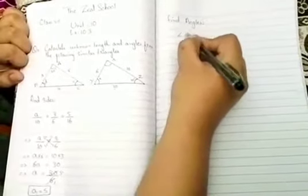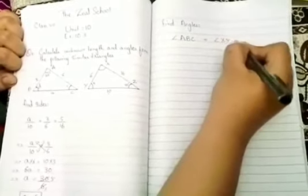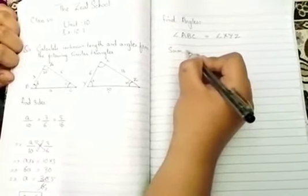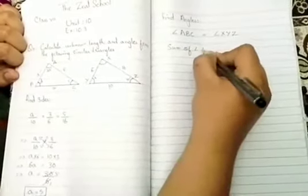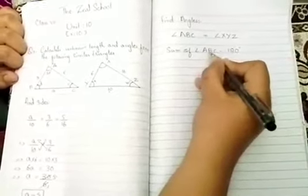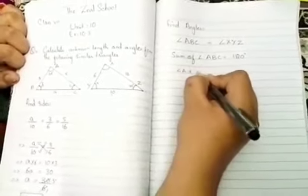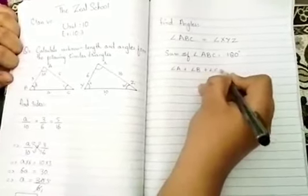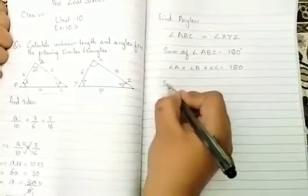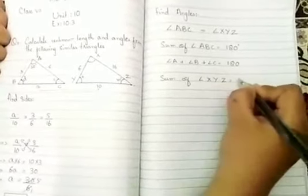Now, angle ABC is equal to angle XYZ. If we find the sum, we know that the sum of angle ABC is equal to 180 degrees, because in a triangle the sum of all angles is equal to 180 degrees. Which means that angle A plus angle B plus angle C is equal to 180 degrees.